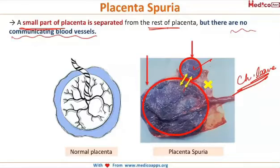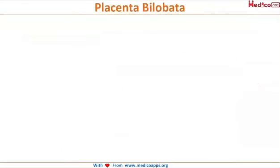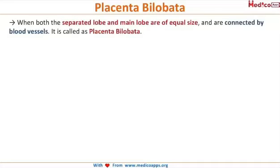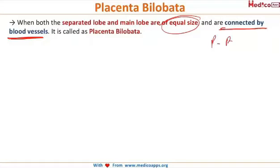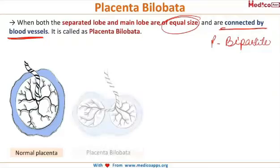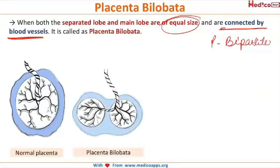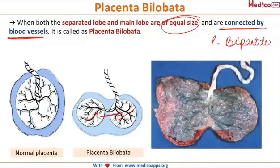The next type is placenta bilobata, in which the separated lobe and the main lobe are of equal size and connected by blood vessels, similar to placenta succenturiata. This is also called placenta bipartite or placenta duplex. As seen in the diagram, both lobes are equal in size and connected by a leash of blood vessels.